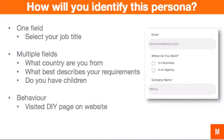Once you know who your persona is, you need to identify ways to identify this persona online. This may be when they fill out a form — maybe you just need to ask their job title and once you know that, you know what persona they are. Or it may be multiple select criteria, such as what country they're in, what best describes their requirements, and whether they have children — and based on those three fields you place them into persona A, B, or C. The last option is behavior: personas that visit a particular page on your website may be persona A versus those visiting other sections being persona B.